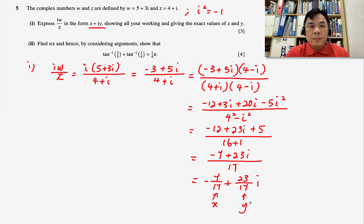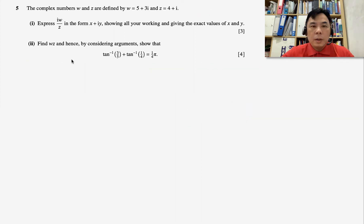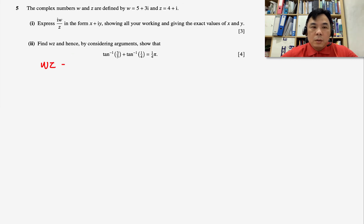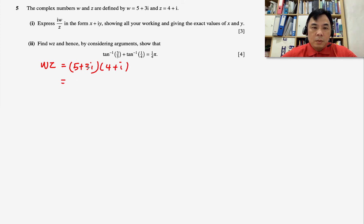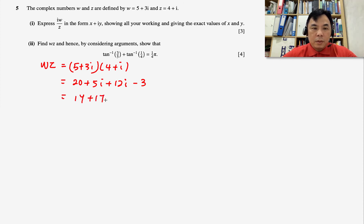Now moving on to part two: find wz and hence by considering its argument prove the given expression. We find the product wz = (5 + 3i)(4 + i). Expanding: 20 + 5i + 12i + 3i² = 20 + 17i − 3 = 17 + 17i.